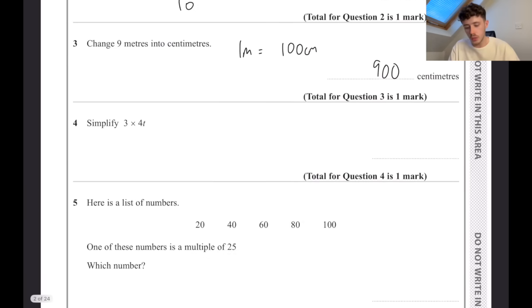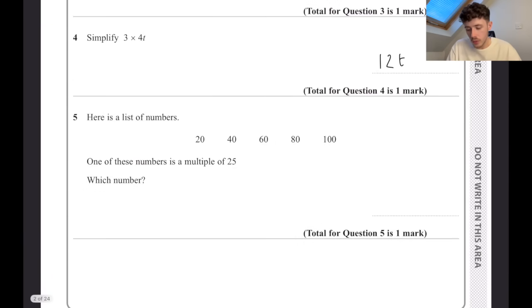Simplify 3 times 4t. Because everything's being multiplied, times the numbers and then times the letters. Because there's only 1t, it's going to be 12t. Here is a list of numbers. One of these is a multiple of 5 - multiple means in the 5 times table, so 25, 50, 75 or 100, which is our answer.